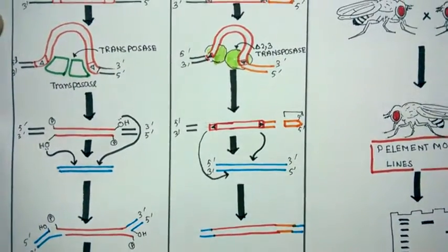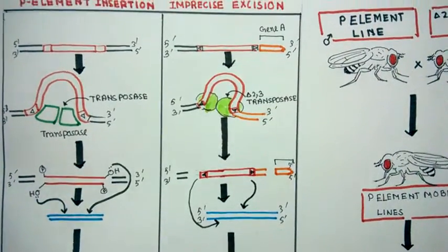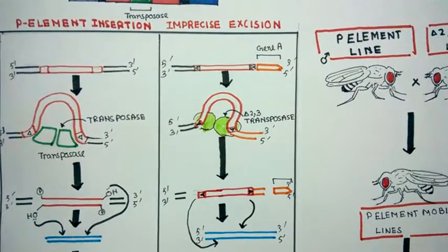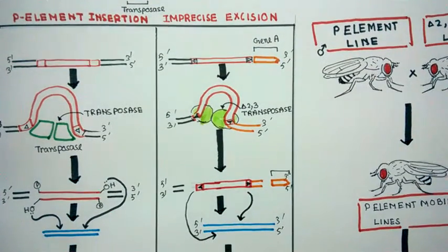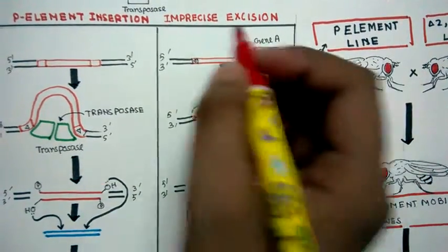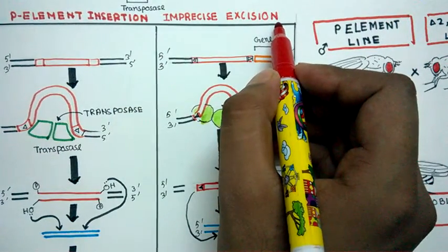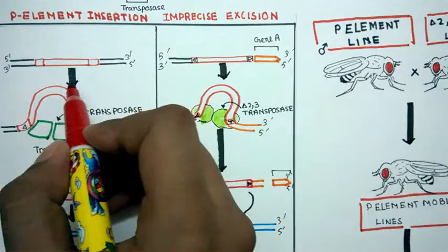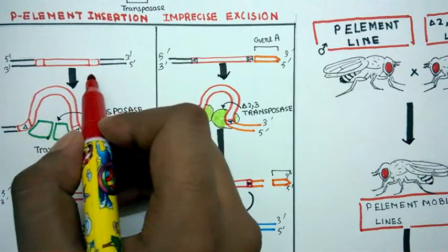But it is very important to understand that whatever technique we are using in Drosophila, it's a little bit different from the real-time scenario. This particular technique is known as imprecise excision. In the earlier condition, we see that this P-element is able to make transposase.